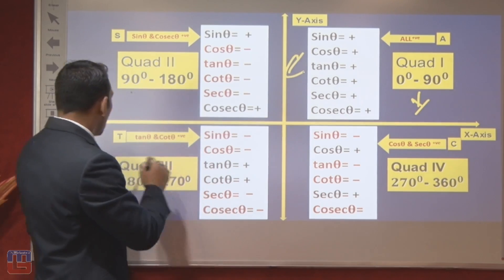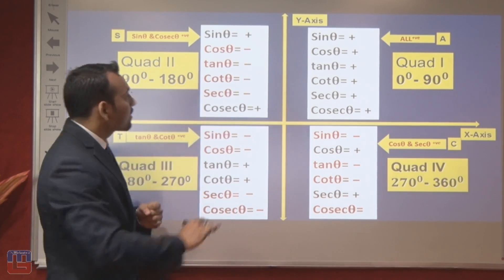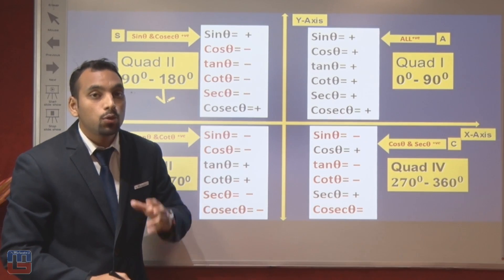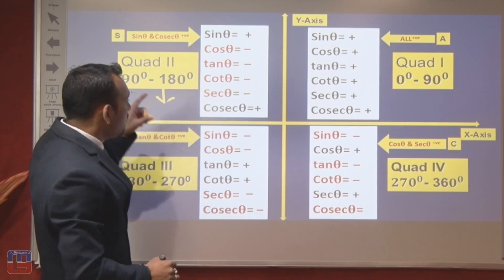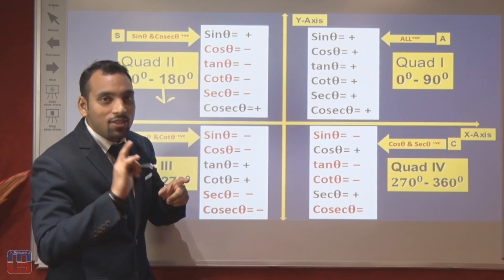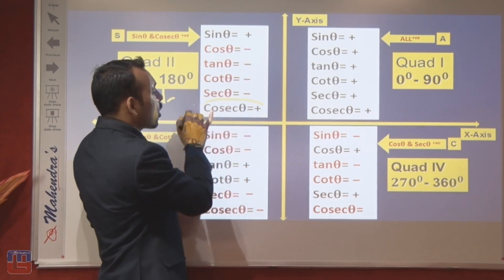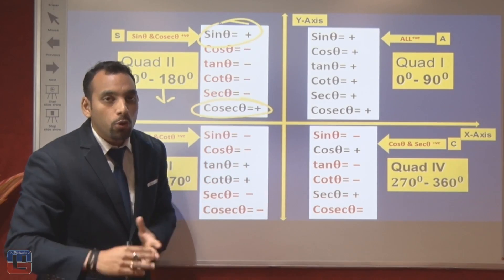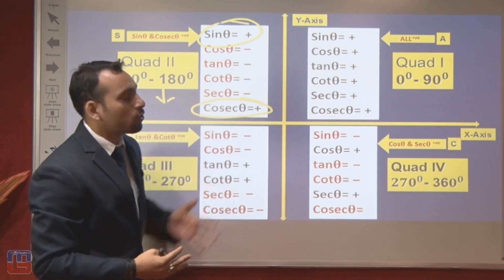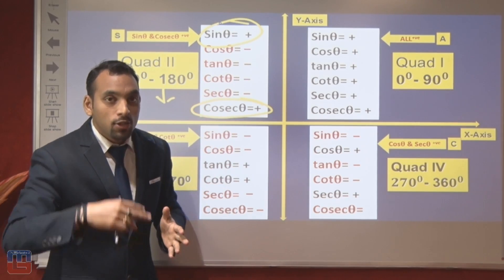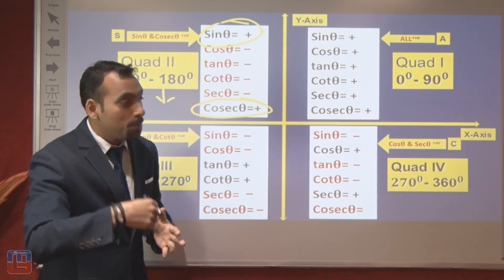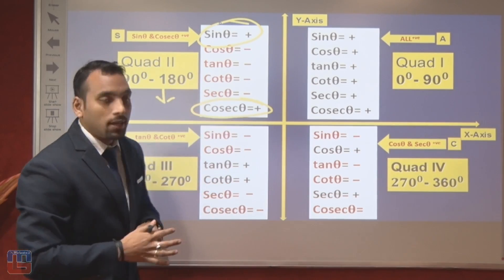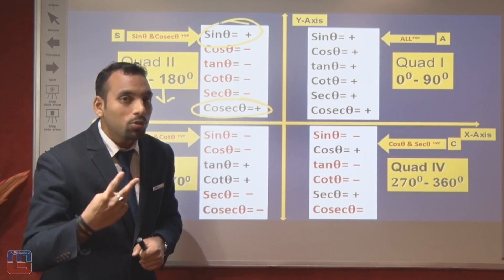In the second quadrant, angles from 90° to 180° lie. In the second quadrant, sine θ and cosec θ — these two ratios — will be positive, and the rest will be negative.